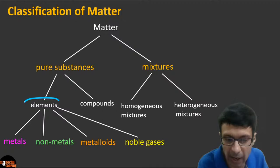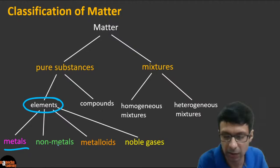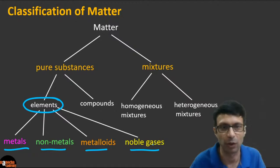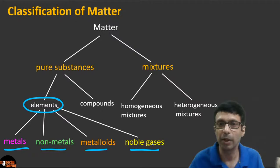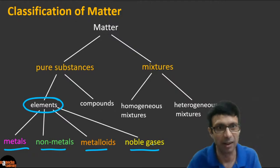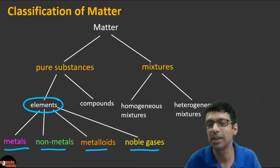Elements can be divided into metals, non-metals, metalloids, and noble gases. Our main focus today will be on metals and non-metals. We'll talk a bit about metalloids and won't discuss noble gases, also known as inert gases, in detail today.